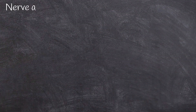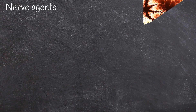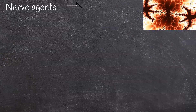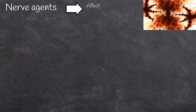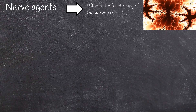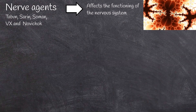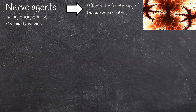Chemical weapons can be of different types and are classified as follows. Nerve agents: they affect the functioning of the nervous system. Common nerve agents include Tabun, Sarin, and Soman.